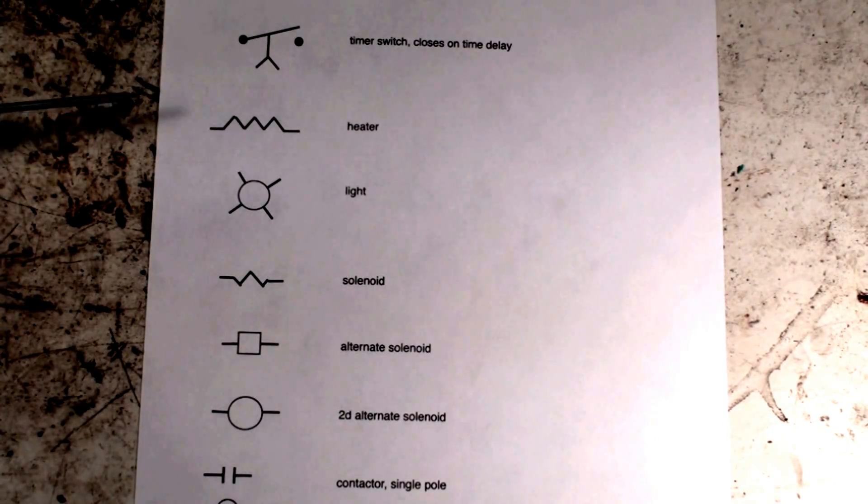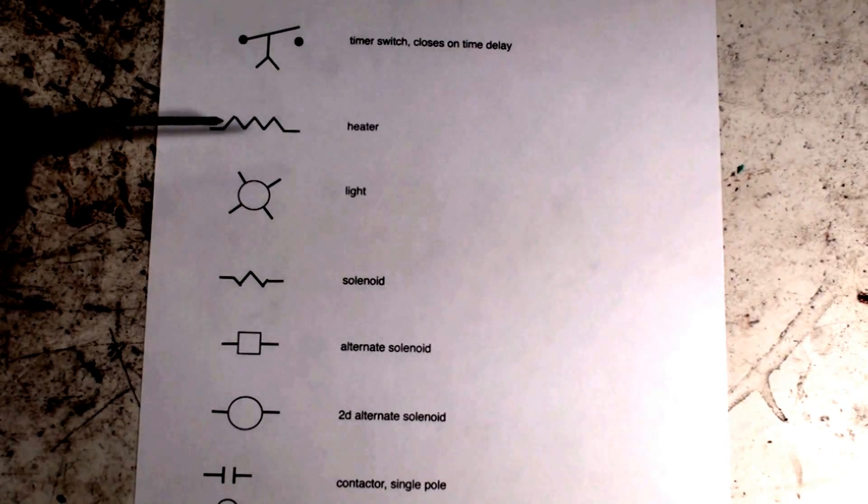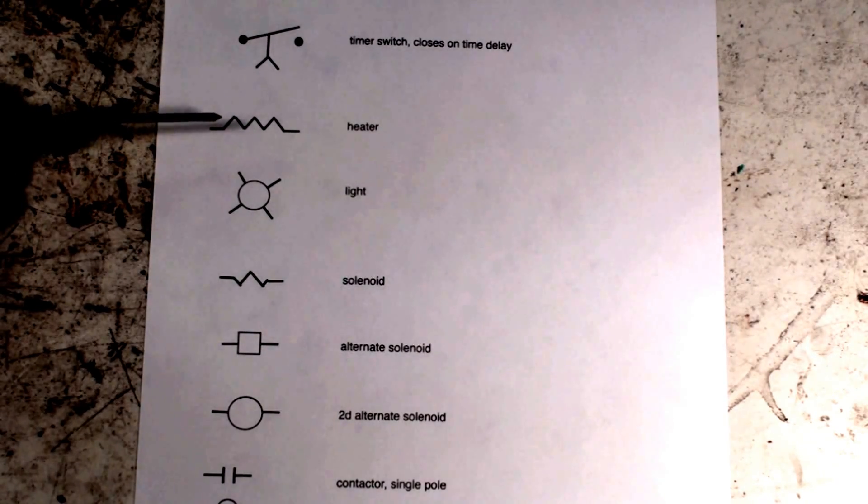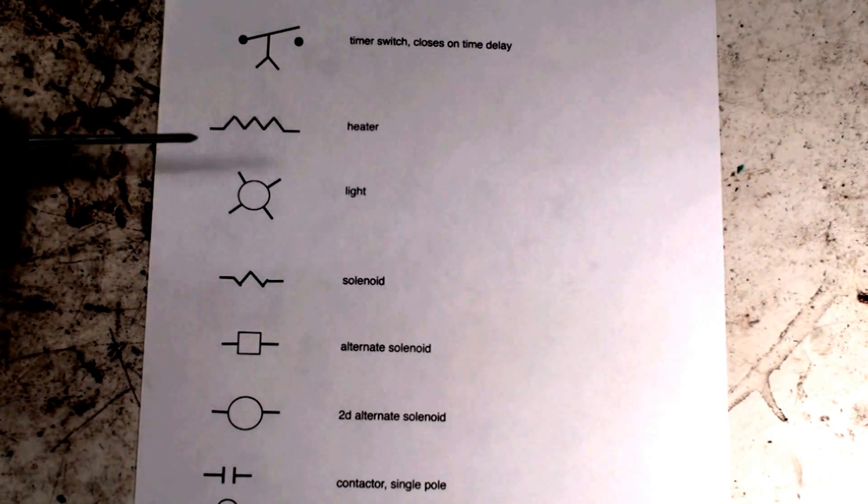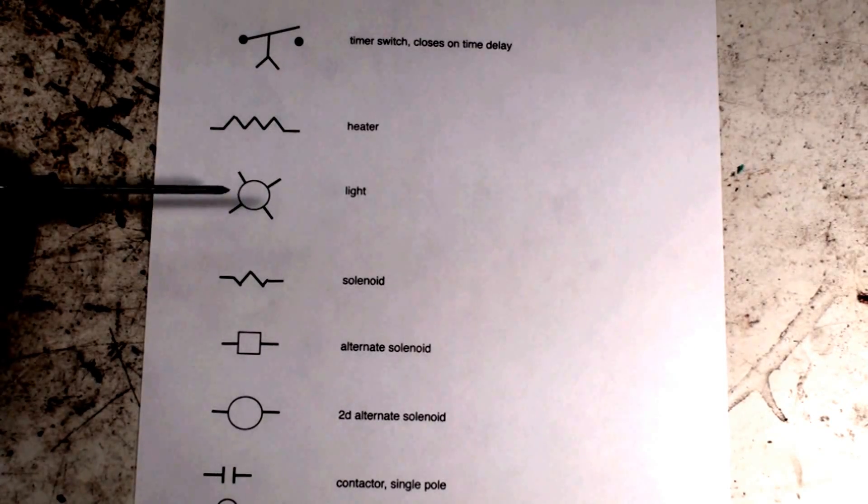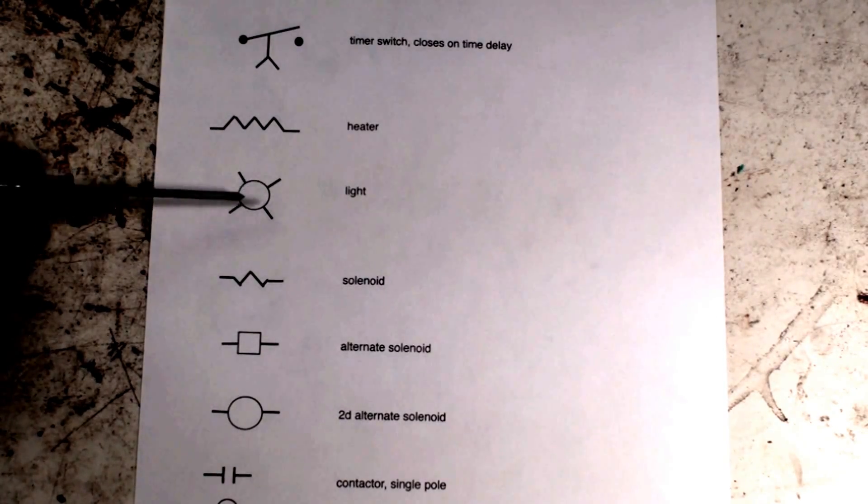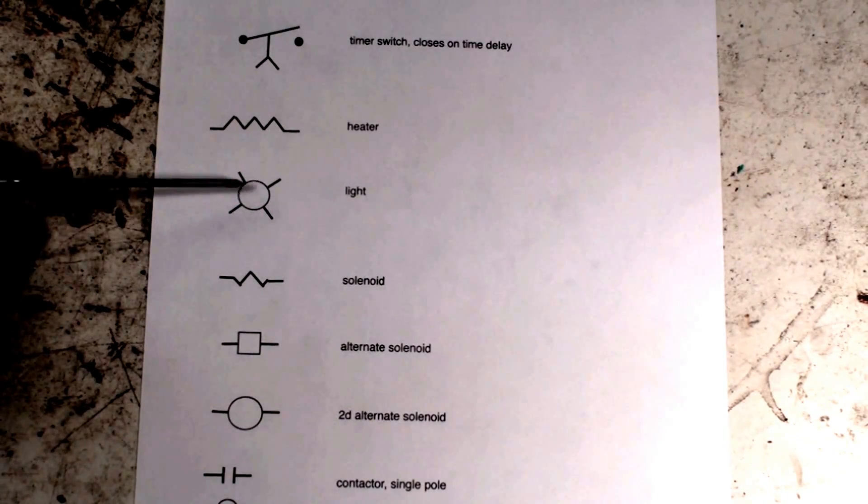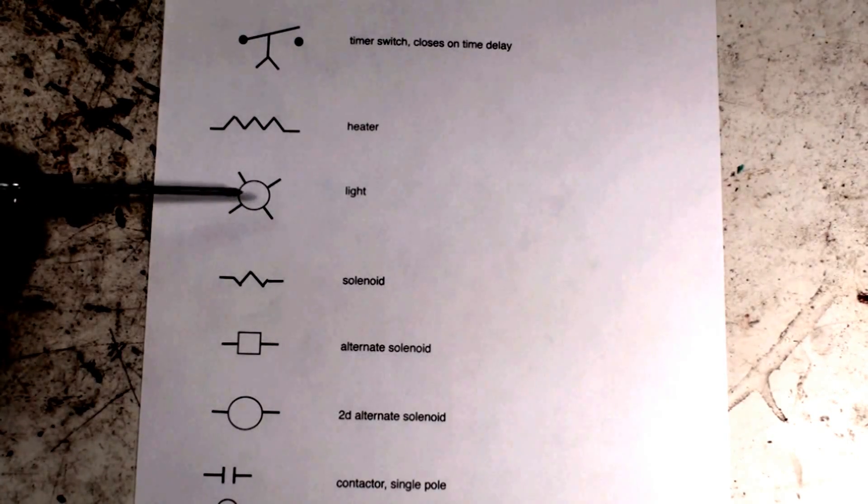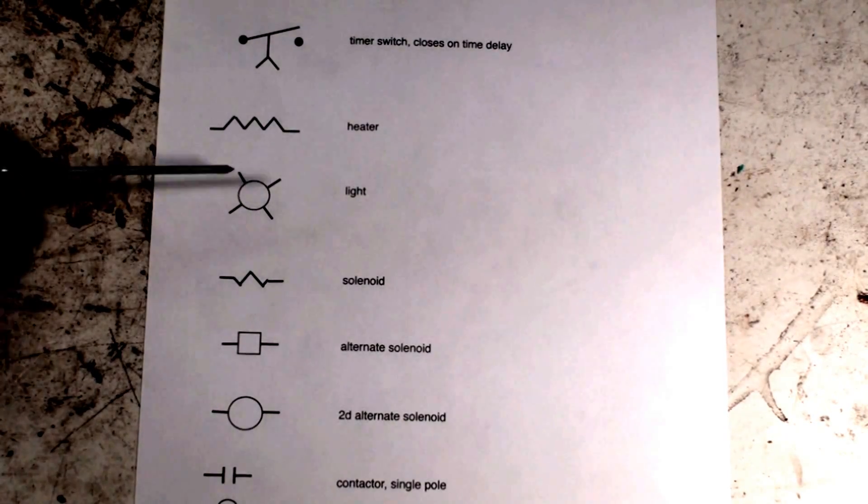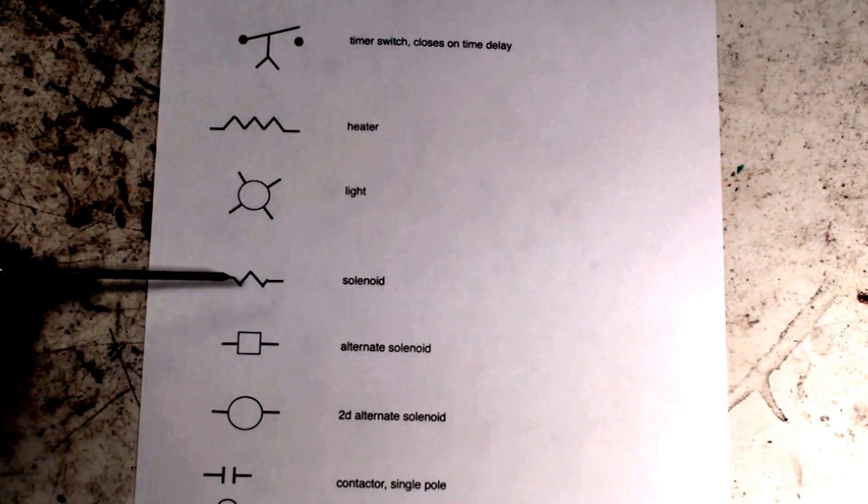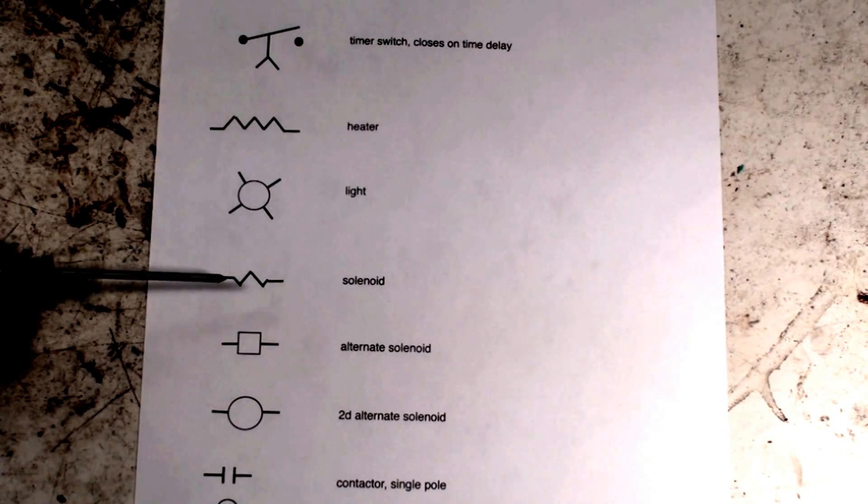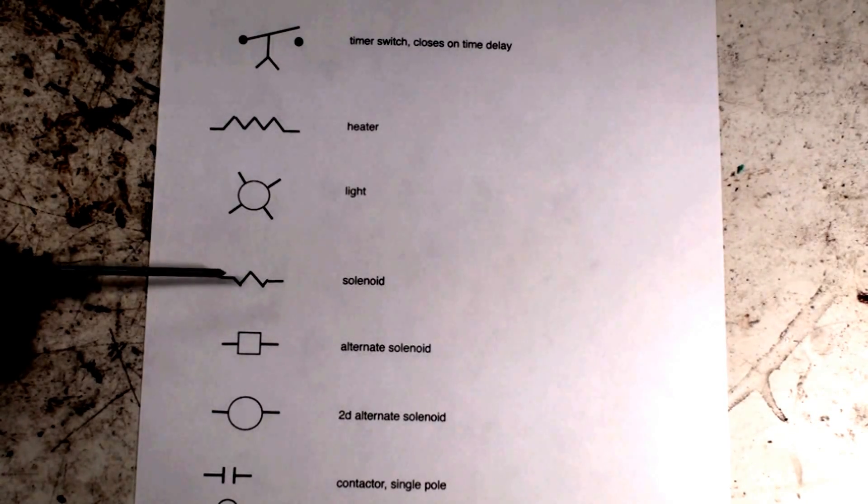This one's for a heater, an electric heater. This one here is for some kind of light. The color of the light will usually be printed in the center - if it's a red light it'd be R or something like that. So that would be a light.